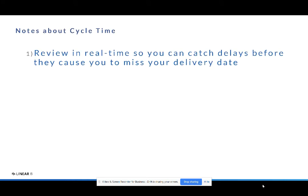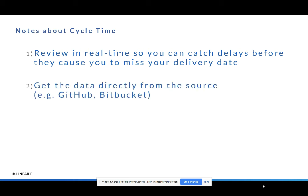There are a lot of other use cases where if you see issues inside of your iteration, you can actually fix them, so we think reviewing cycle time in real time is important. In order to do that, you need to get your data directly from the source. If you're relying on data just from JIRA or your project management system, since it's being updated manually, it may not be accurate enough for you to act on.